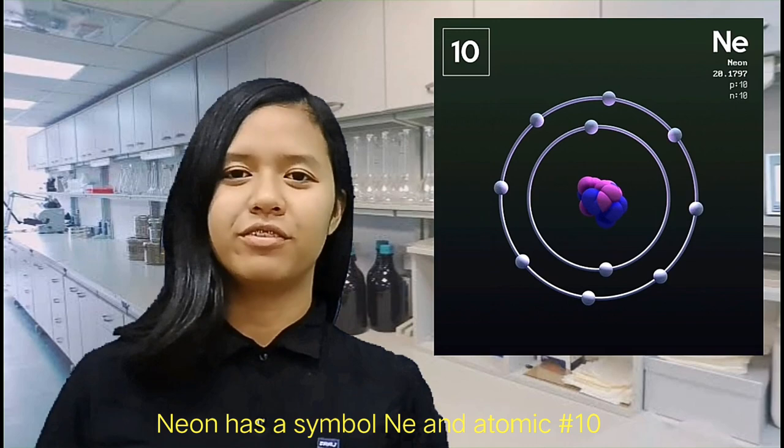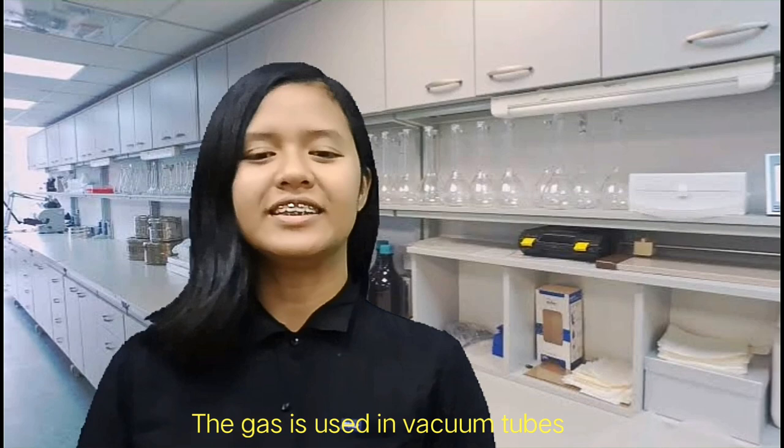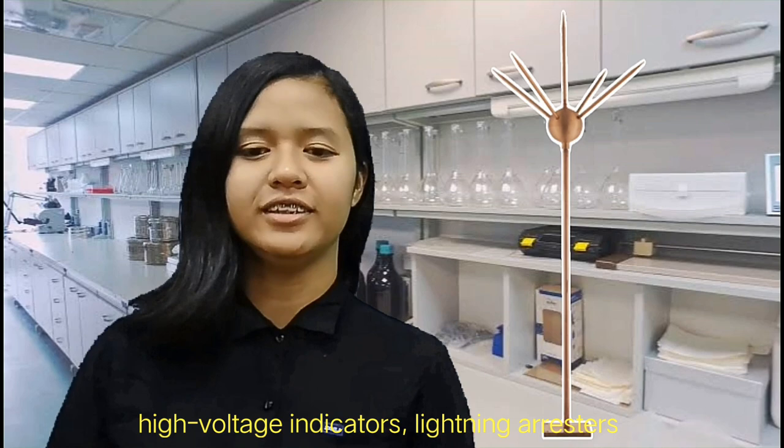The next noble gas is neon. Neon has a symbol of Ne and atomic number of 10. It was discovered by William Ramsay and Morris Travers. This gas is used in vacuum tubes, high voltage indicators, lightning arrestors, wave tubes, television tubes, and helium neon lasers. The color of the light depends on the gas mixture.